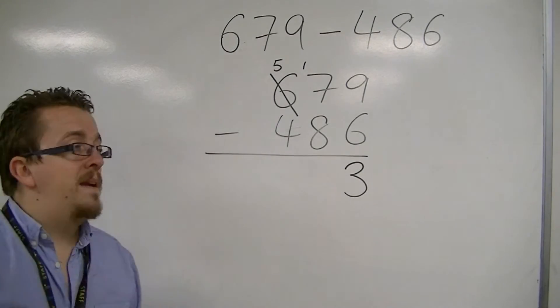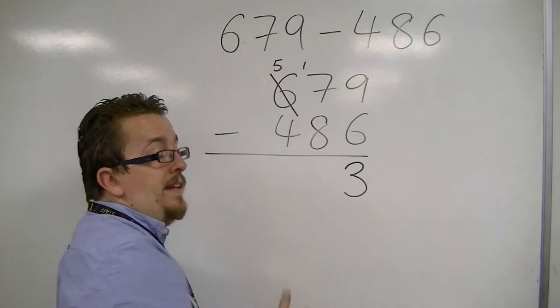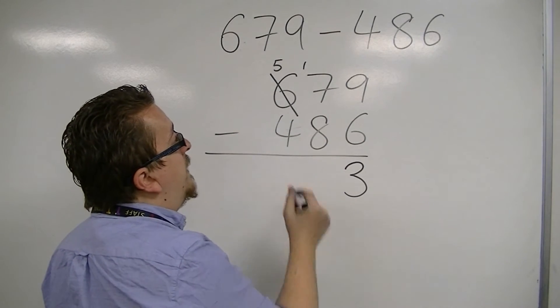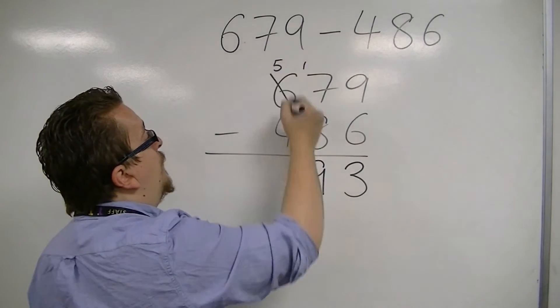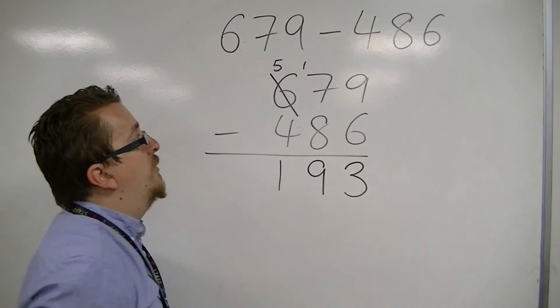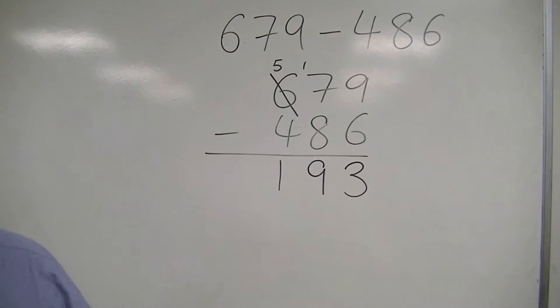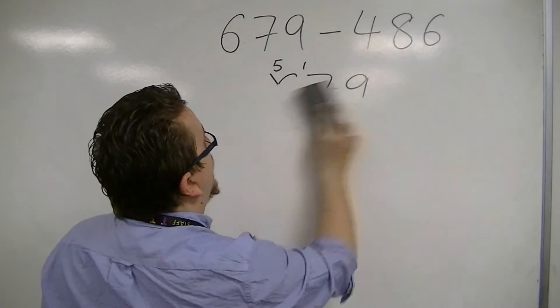But that just means that we're now looking at 17 rather than 7. 17 take away 8 is 9. And 5 take away 4 is 1. So we're left with 193. Let's see a couple of examples with decimals.